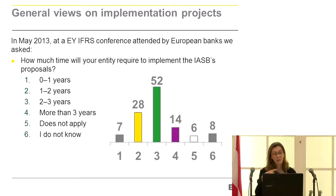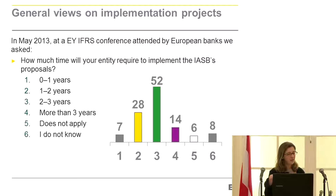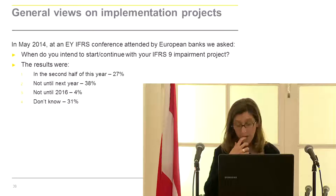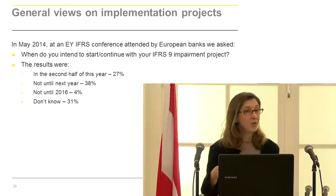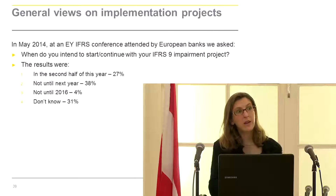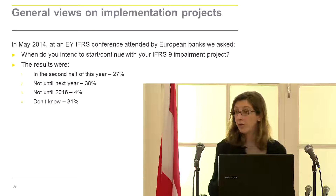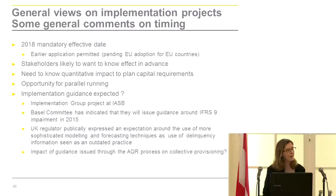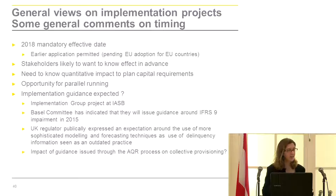Looking at where banks are in their implementation projects: most banks expected it would take three years to implement the new impairment model, but when asked about progress they were not so organized to use those three years well — especially given that a one-year parallel run before implementation would be very relevant. The AQR is not helping banks prepare for IFRS 9. Projects will probably really start in 2015 once the AQR is behind us, but banks must prepare early enough to be well prepared.